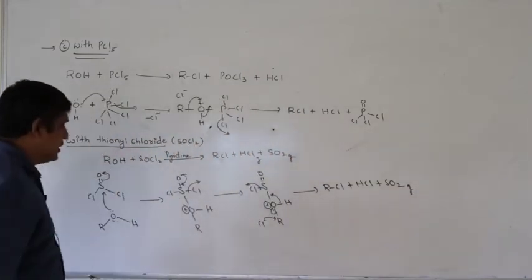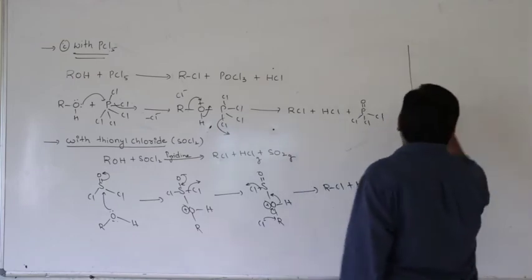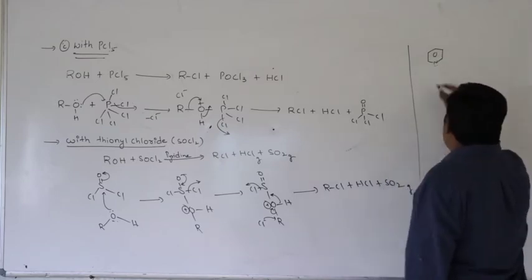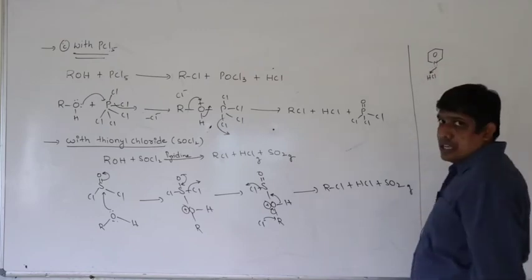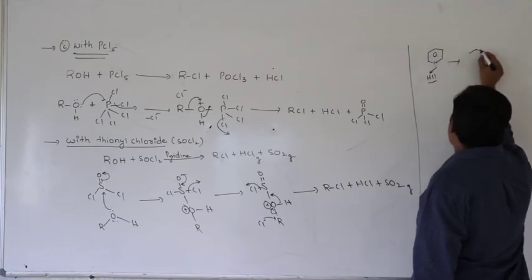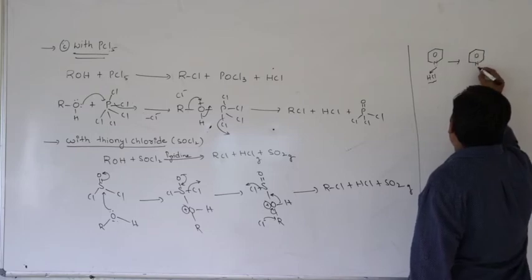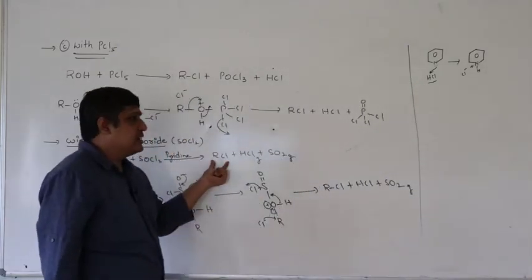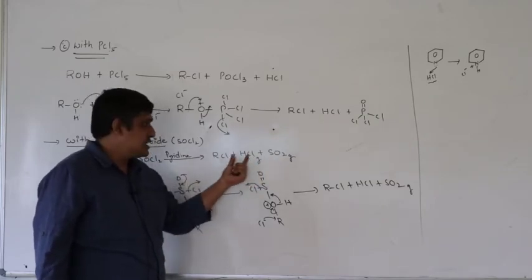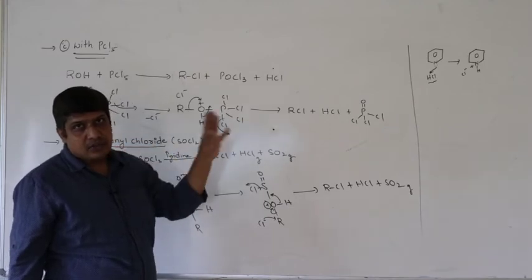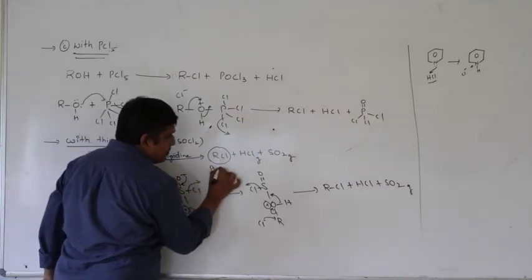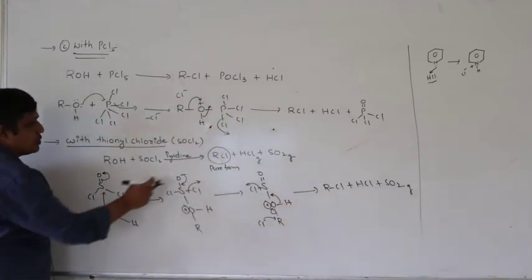What is the purpose of pyridine? Pyridine is a base. The HCl formed is an acid; pyridine reacts with HCl to form pyridinium chloride. This means the formed HCl is removed as pyridinium chloride salt. The obtained alkyl halide is present in its purest form because SO2 is a gas that escapes, and HCl is removed by addition of pyridine as a salt.